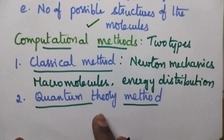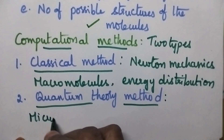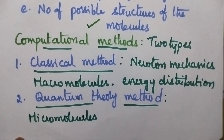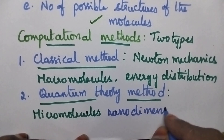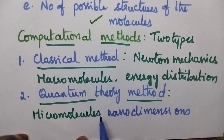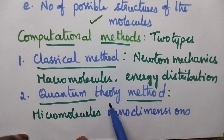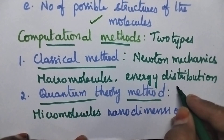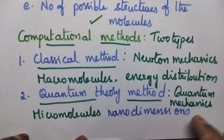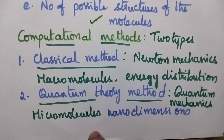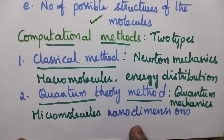Coming to the quantum theory method — it is the modern technique by which it is possible to determine the structure of micromolecules having nanodimensions. This quantum theory method is totally based upon quantum mechanics. It is possible to study the detailed structure of micromolecules having nanodimensions along with their properties and charge distribution.